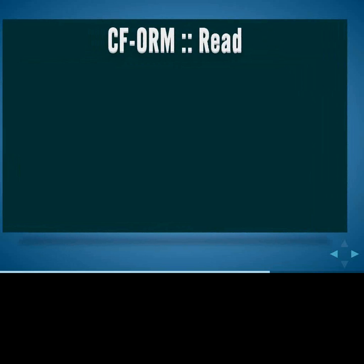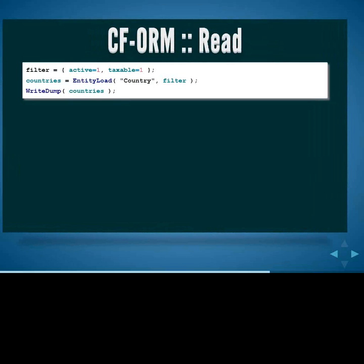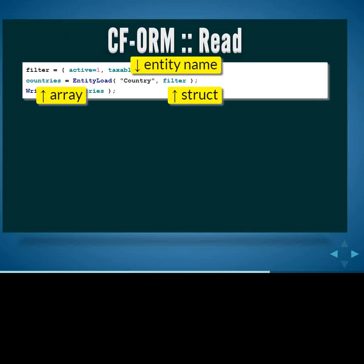Now we've got the data into the database, we want to be able to get it out. Use the entityLoad method and pass in the name of the entity you want — not the database table name, the entity name. Then pass the filter as the second argument. That returns an array of objects, where each element in the array is one object. Each of those has a getter and setter, so you just loop through the array and call the getters. It's different from using queries, but it's not difficult — just a different way of doing things.